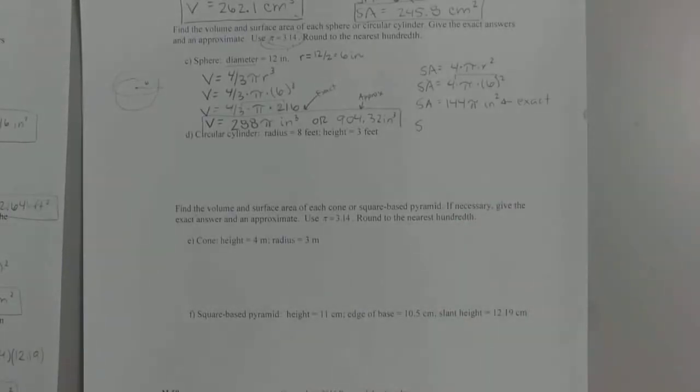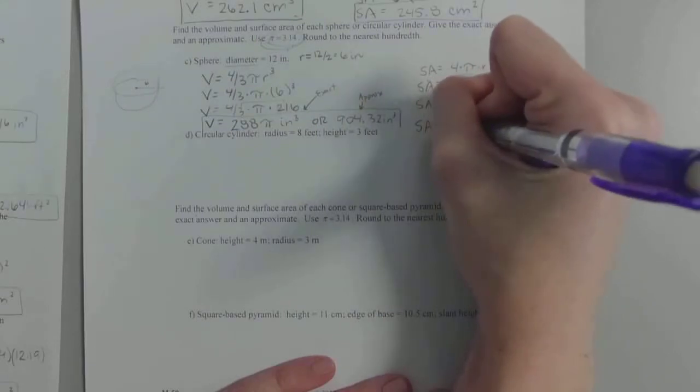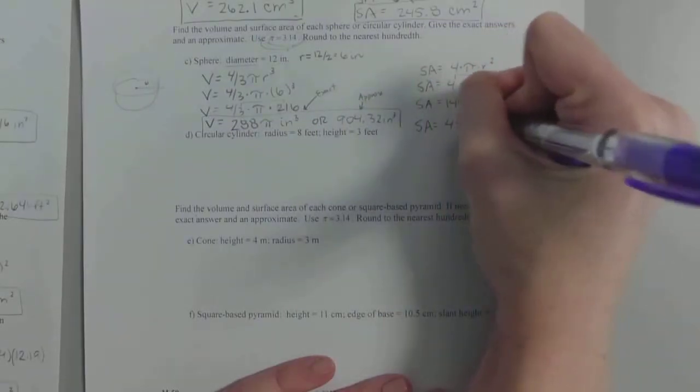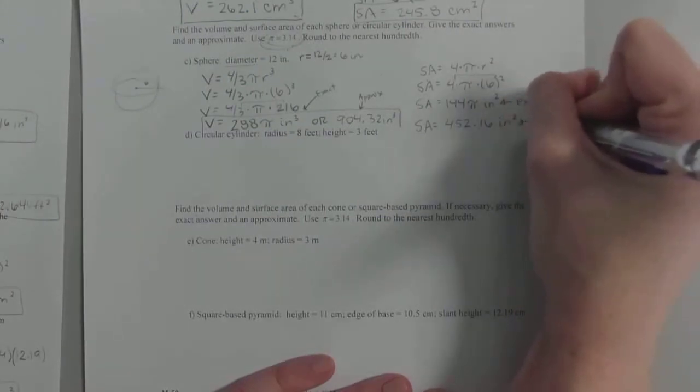So we're going to take 144 times 3.14, round it to two decimals. What do you get? You should get 452.16, do you guys get that? And that's the approximate.